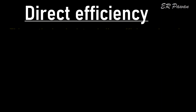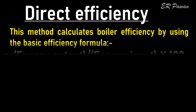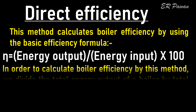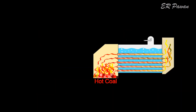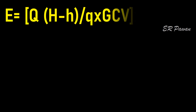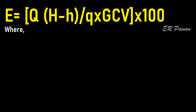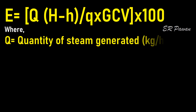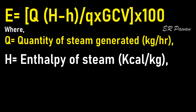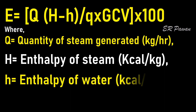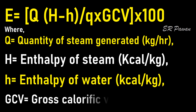Direct efficiency: This method calculates boiler efficiency by using the basic efficiency formula. We divide the total energy output of a boiler by total energy input given to the boiler, multiplied by 100. The formula is: E = Q × (H - h) / (q × GCV) × 100. Where Q equals quantity of steam generated in kg per hour, H equals enthalpy of steam in kJ per kg, h equals enthalpy of feed water in kJ per kg, and GCV equals gross calorific value of the fuel.